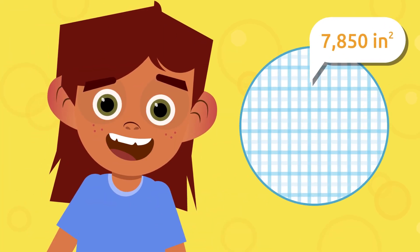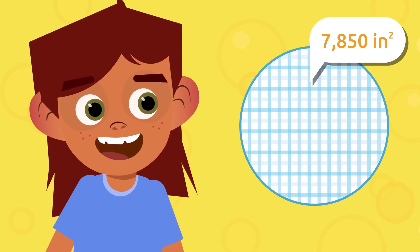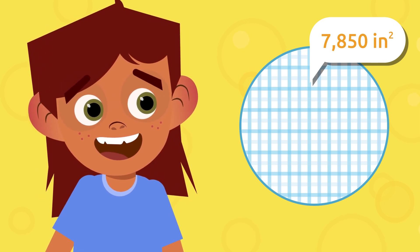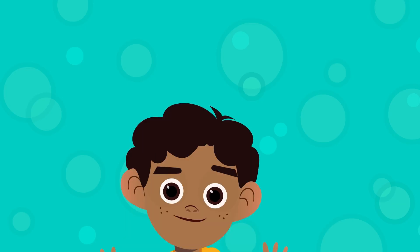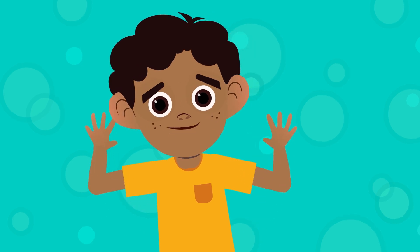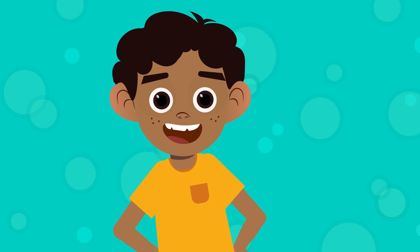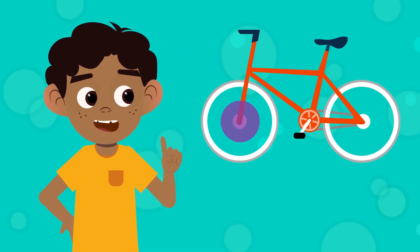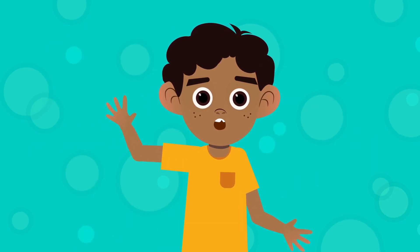Anna needs 7,850 square inches of fabric to make her new tablecloth. If we were patient enough to count them, we would see that there are exactly 7,850 squares on the tablecloth's surface, each measuring one square inch. Would you like to try measuring the area of round objects around you — like the wheel on a bike? See you around!